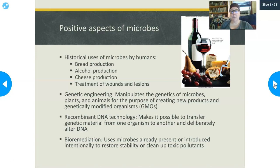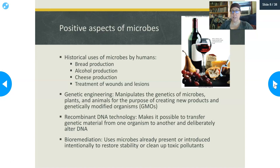Recombinant DNA technology makes it possible to transfer genetic material from one organism into another and deliberately alter the DNA. They're mixing plant and insect DNA — not just plant with plant DNA — sometimes taking DNA from animals and insects and putting it into plant DNA, and some of the long-term consequences on our health are still unknown. Microbes can also be used in bioremediation, which uses microbes already present or intentionally introduced to restore stability or clean up toxic pollutants in the environment.